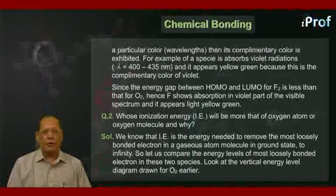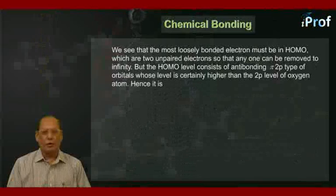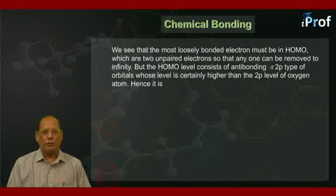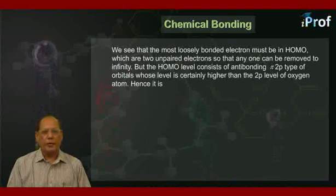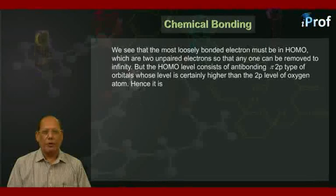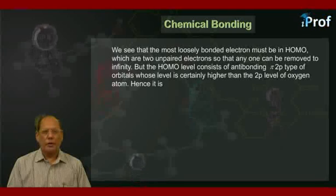Look at the vertical energy level diagram drawn for O₂ earlier. We see that most loosely bonded electron must be in HOMO which are two unpaired electrons, so that anyone can be removed to infinity. But the HOMO level consists of anti-bonding π 2pᵧ type of orbitals whose level is certainly higher than the 2p level of oxygen atom.